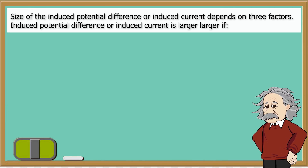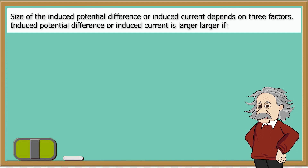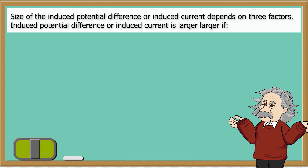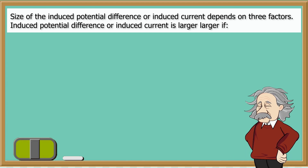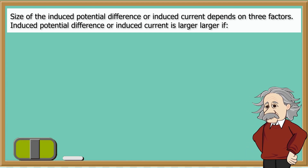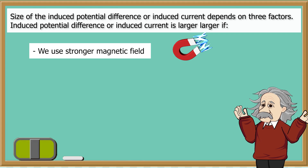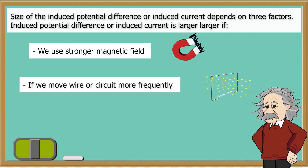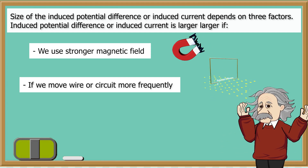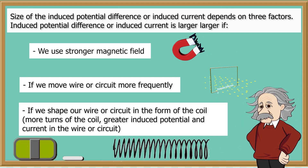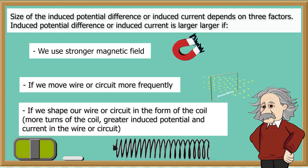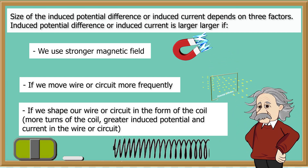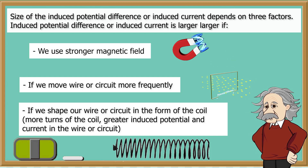The size of the induced potential difference or induced current depends on three factors. The induced potential difference or induced current is larger if: we use a stronger magnetic field; if we move the wire or circuit more frequently; or if we shape our wire or circuit in the form of a coil. More turns of the coil means a greater induced potential and current.